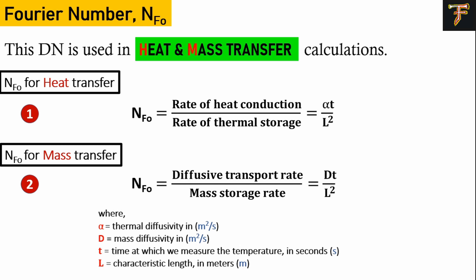In mass transfer, we replace thermal diffusivity α with mass diffusivity D. T is the time at which we're analyzing the parameters, and L is the characteristic length.